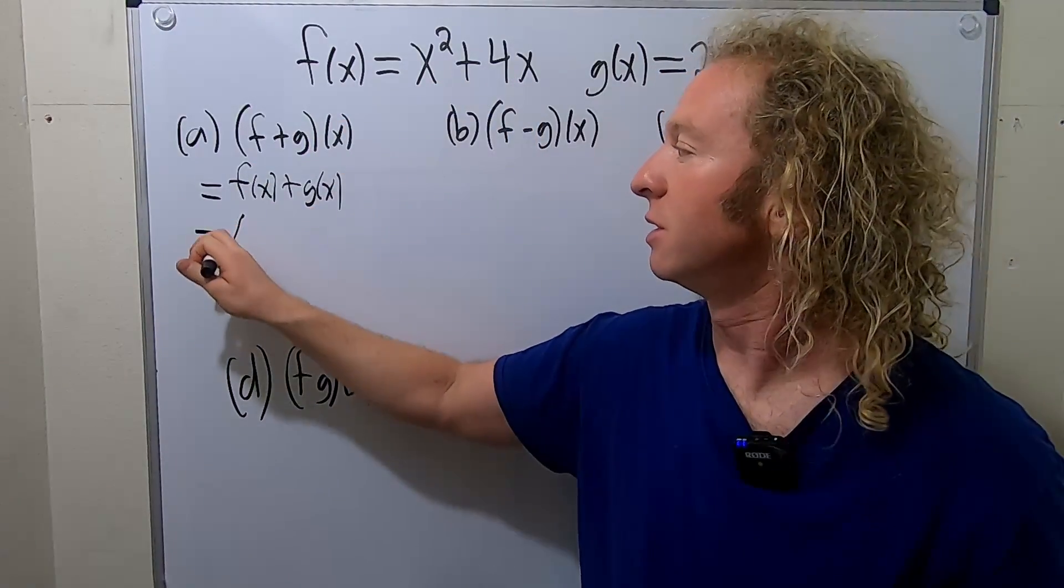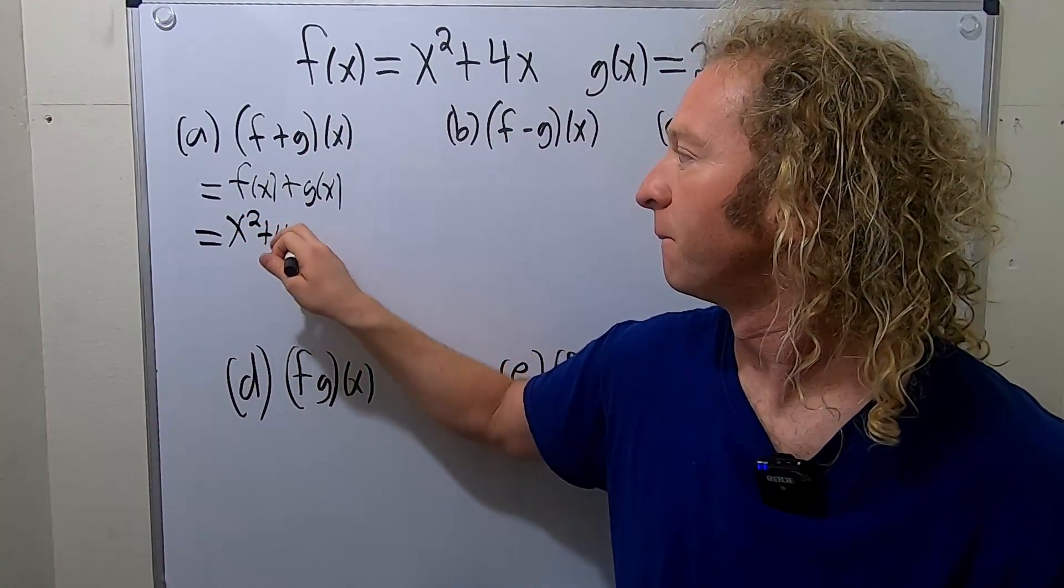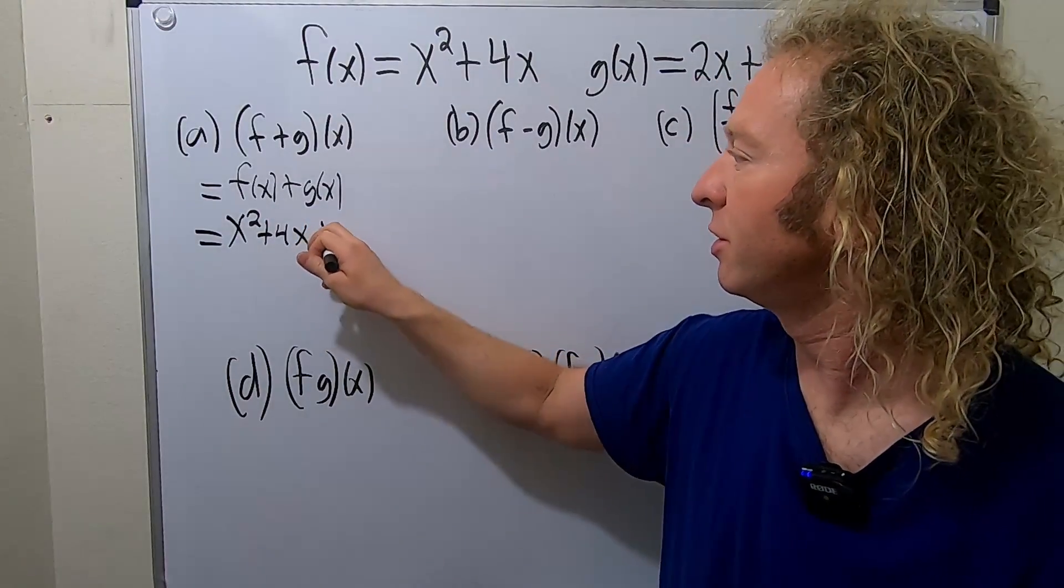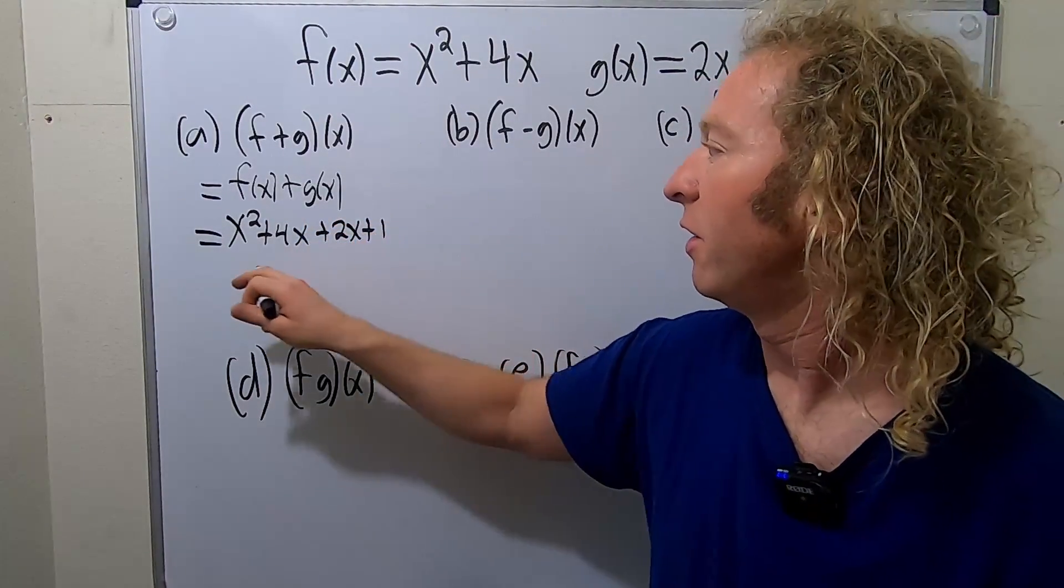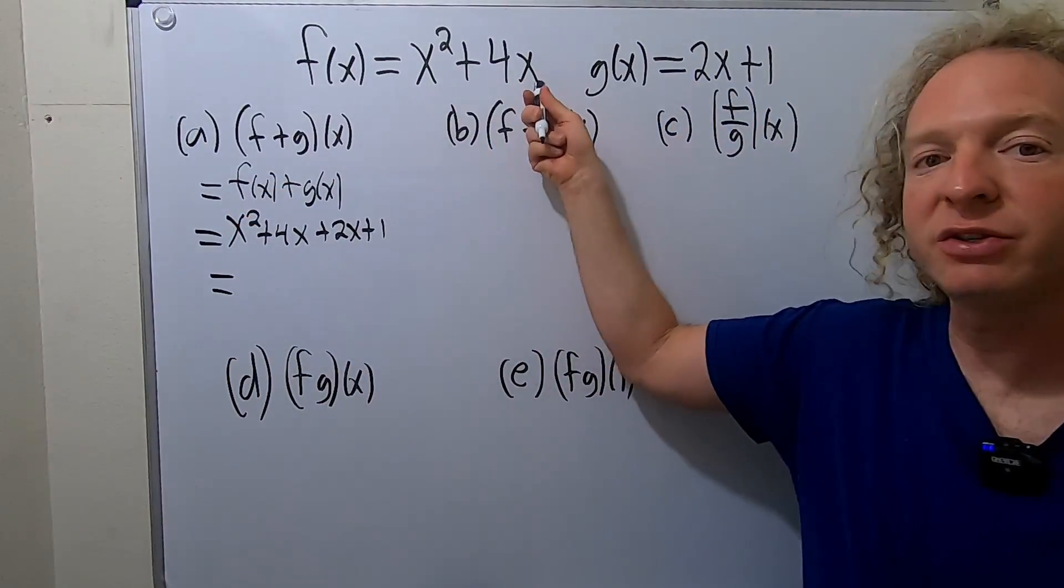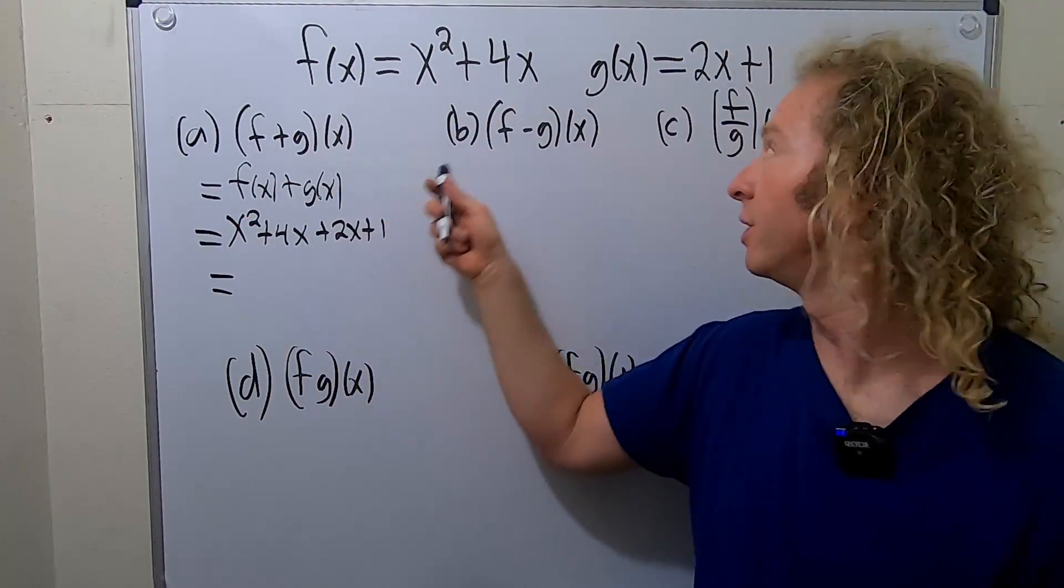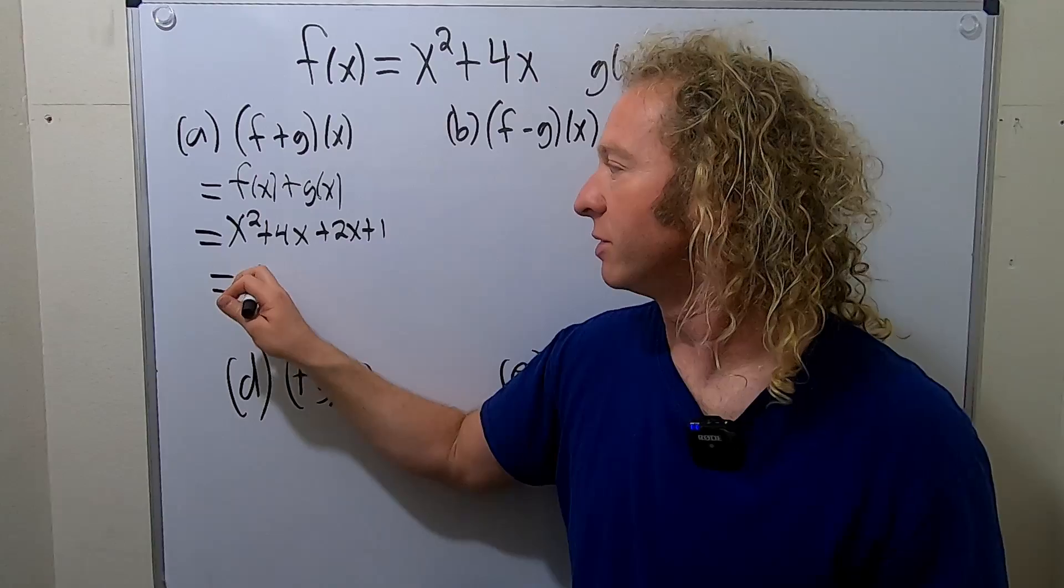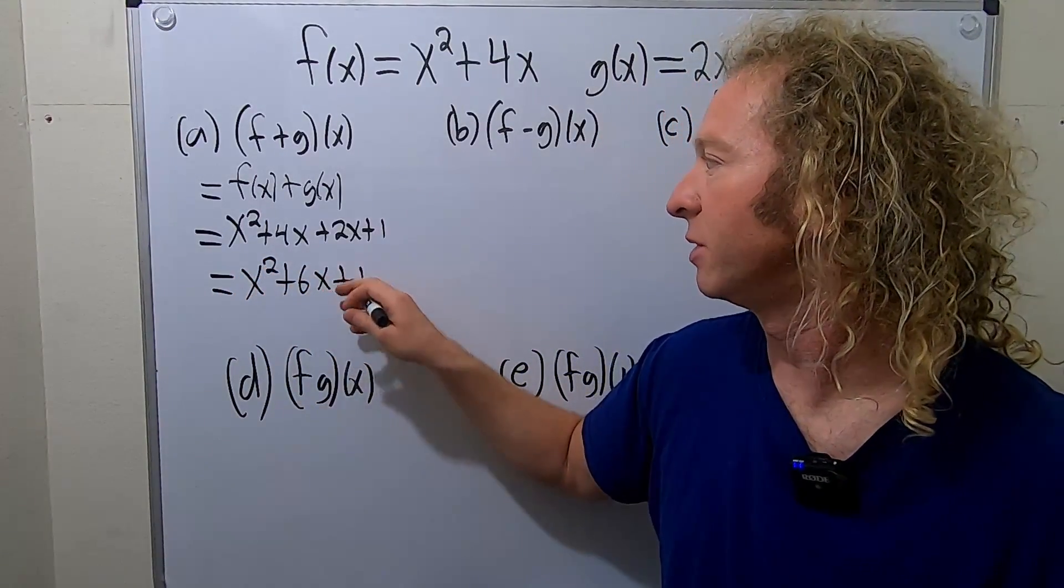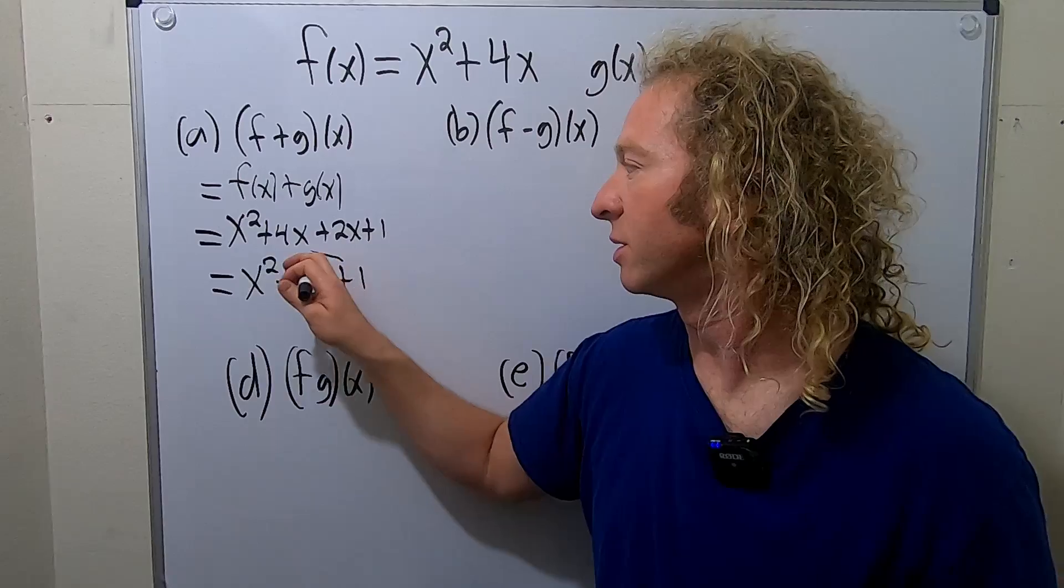So x squared plus 4x, that's this. And then g of x is 2x plus 1, so that's that. So basically, you just replace them with what they are, and then you just add them. So replace f with what it is, replace g with what it is, and then you can add them up. So this will be x squared plus 6x plus 1, because 4x plus 2x is 6x.